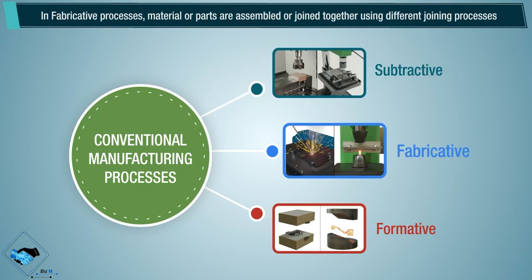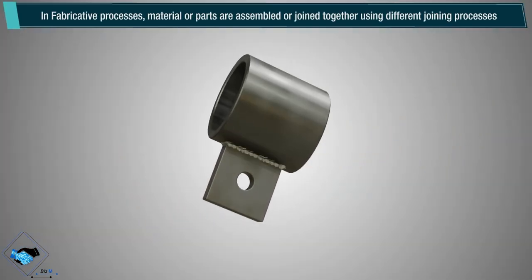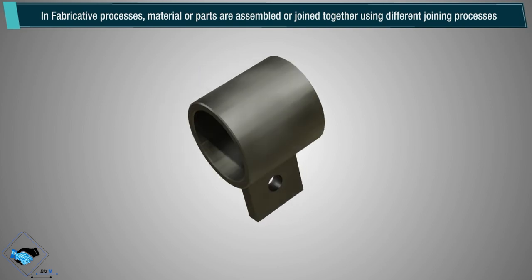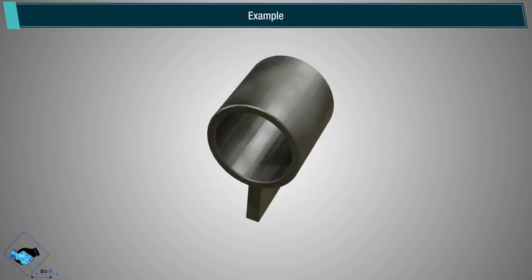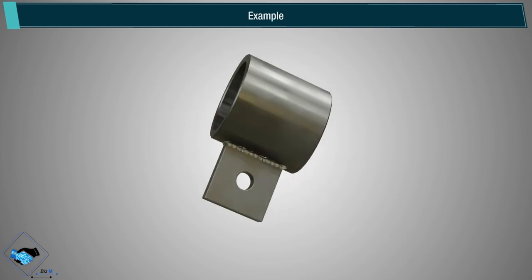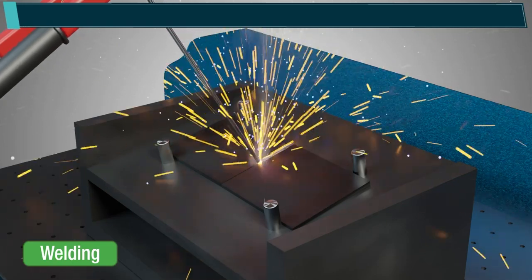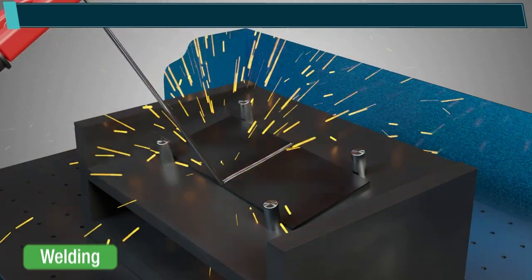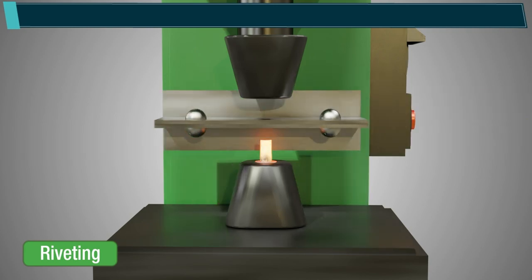In fabricative processes, material or parts are assembled or joined together using different joining processes. For example, welding, bolting, and riveting.